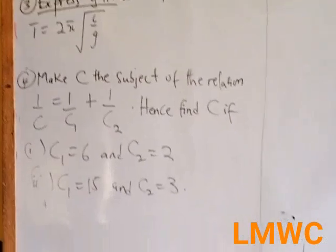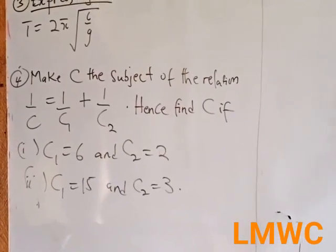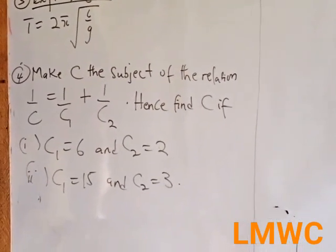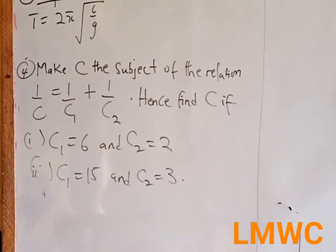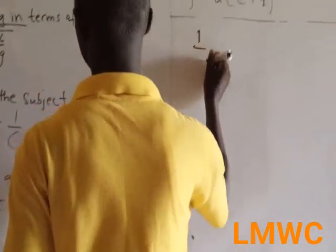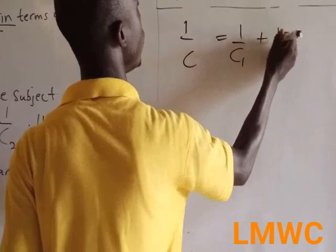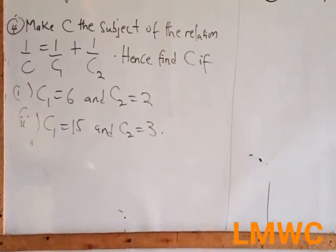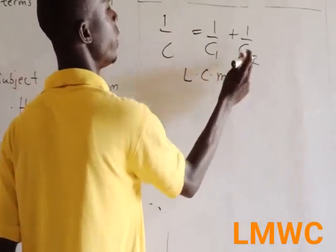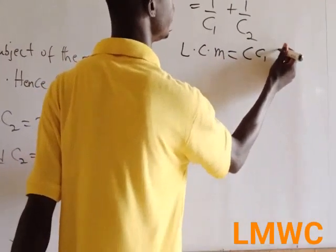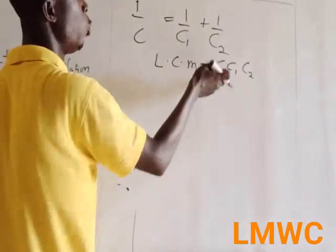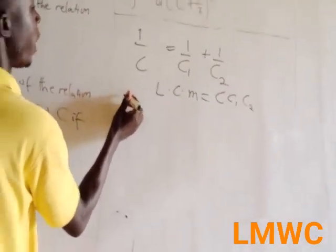Question 4: Make c the subject of the relation 1/c = 1/c1 + 1/c2. Hence find c if: (i) c1 = 6 and c2 = 2; (ii) c1 = 15 and c2 = 3. We are making c the subject. As I always say, the LCM is c·c1·c2. Even if they give you c2, c3, c4, the LCM is c2·c3·c4. So you multiply through by the LCM.